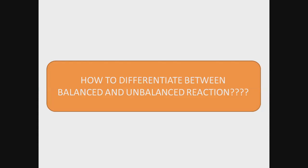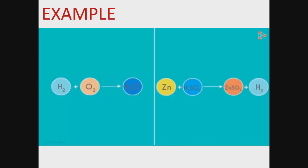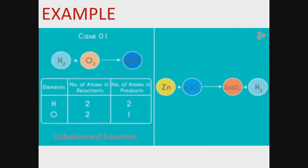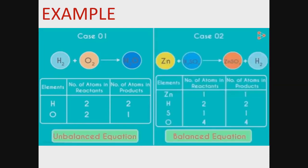Now let's learn how to differentiate between a balanced and an unbalanced reaction with two examples. In the formation of water: H2 + O2 → H2O. Hydrogen has two atoms on the reactant side as well as two atoms on the product side. However, oxygen has two atoms on the reactant side but only one on the product side. So this is an unbalanced equation. In a second example with zinc, hydrogen, sulfur, and oxygen — all elements have the same number of atoms on the reactant side as on the product side, so it is a balanced equation.